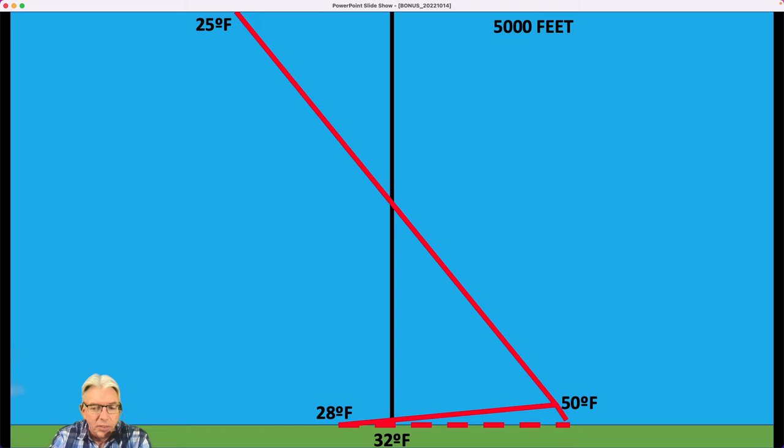However, once we get up to around the 50 degree mark, then it's a whole different ballgame. Then if you want to raise the temperature of the ground just three or four or five degrees, you have to wipe out this amount of energy in this huge rectangle that goes all the way up to about 5,000 feet. Why? Because once the lapse rate is what we call the dry adiabatic lapse rate, which is five and a half degrees per thousand feet, the atmosphere is considered to be well mixed.